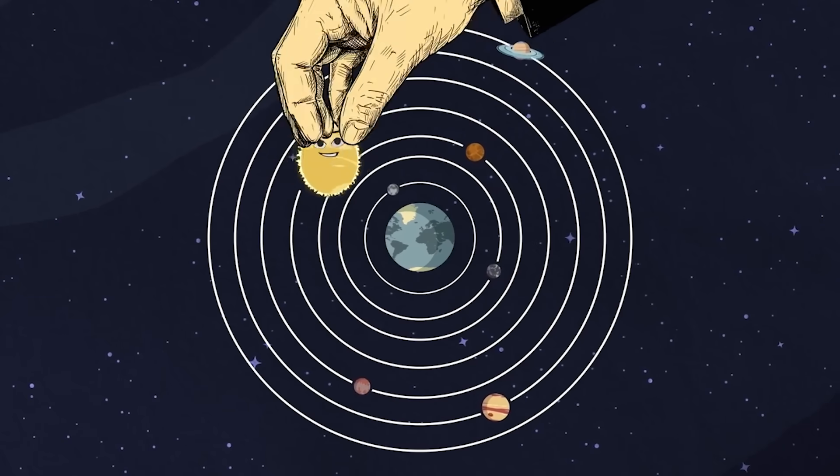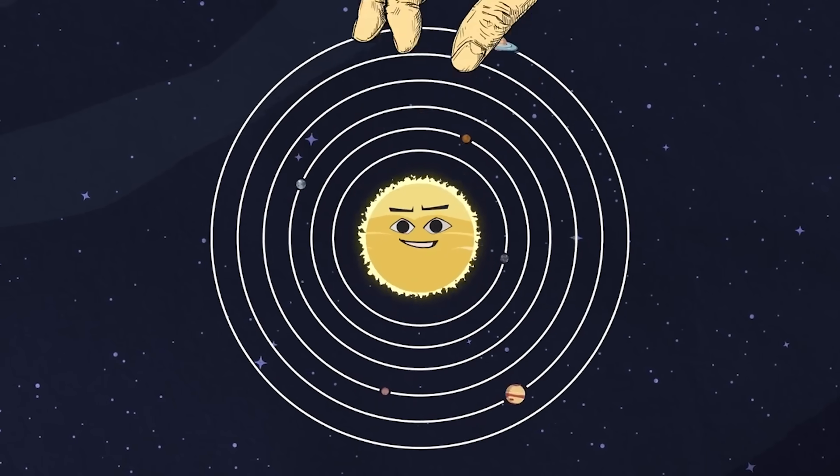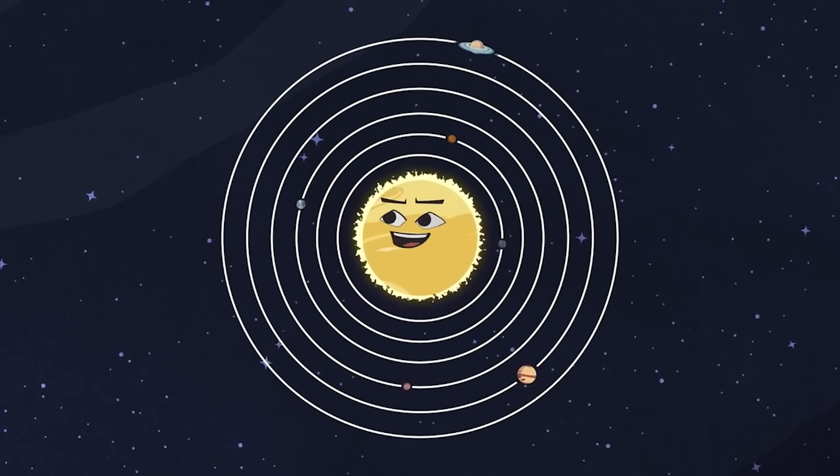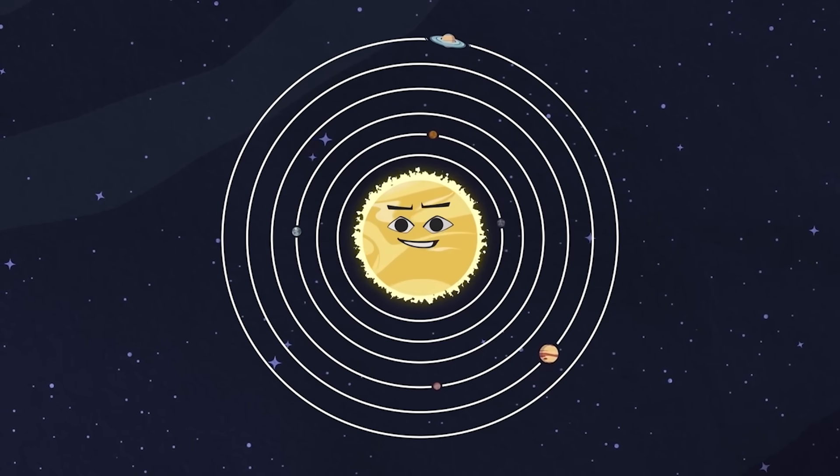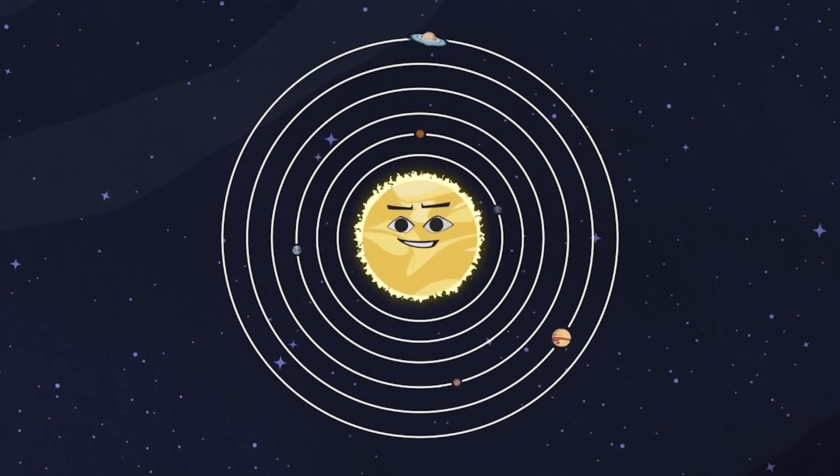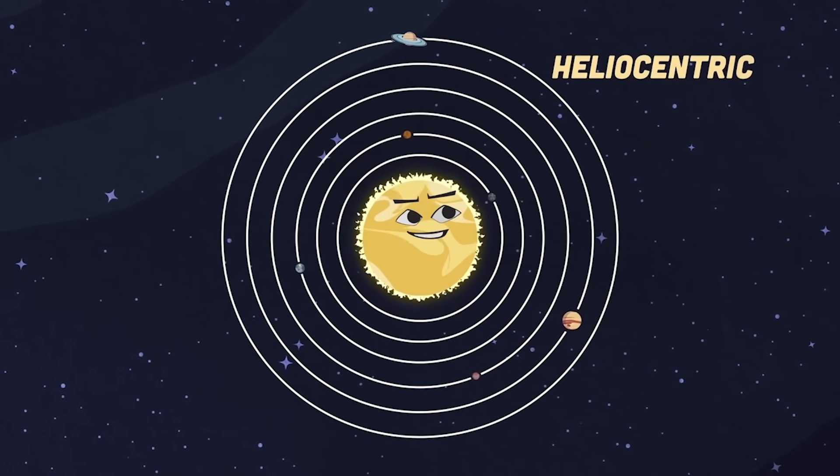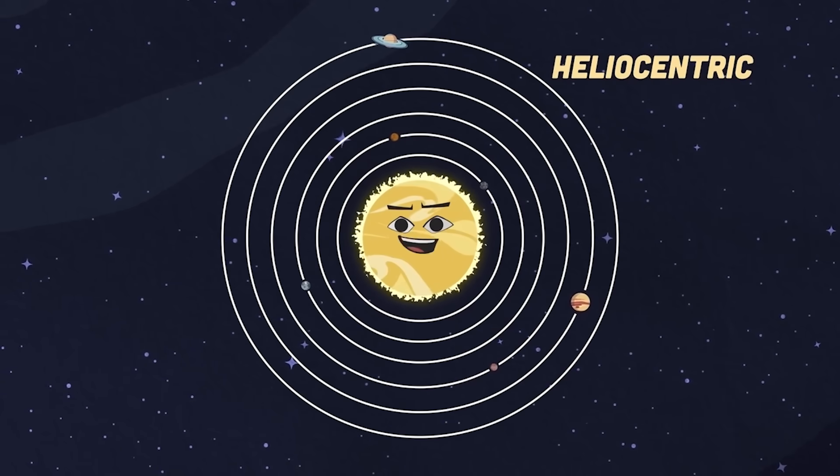But in the 16th century, things began to change. A man named Nicholas Copernicus did decide to rearrange. He introduced a new and at the time crazy theory, placing the sun in the center of the solar system. This new theory of the solar system revolving around the sun was called the heliocentrism model.